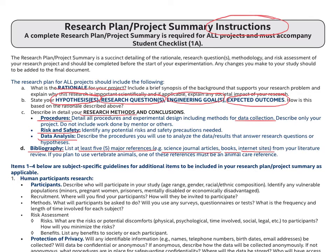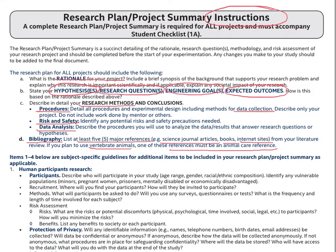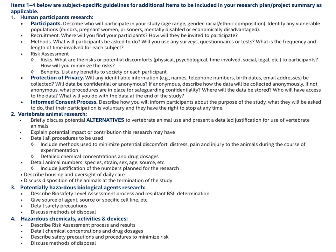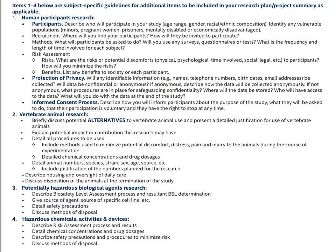For projects involving vertebrate animals, one of the references must be for animal care. In addition to the elements that are required for all projects, there are certain elements that are required depending on the subject matter for the research. For instance, if you are doing research involving human participants, vertebrate animals, potentially hazardous biological agents, or hazardous chemicals, activities and devices, then you will be required to provide additional information.